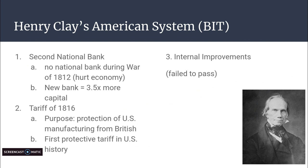The last — the T — is the Tariff of 1816. The purpose of this tariff was protection of U.S. manufacturing from British goods. The reason that this tariff was needed is that after 1812, the British flooded the U.S. with cheap goods.